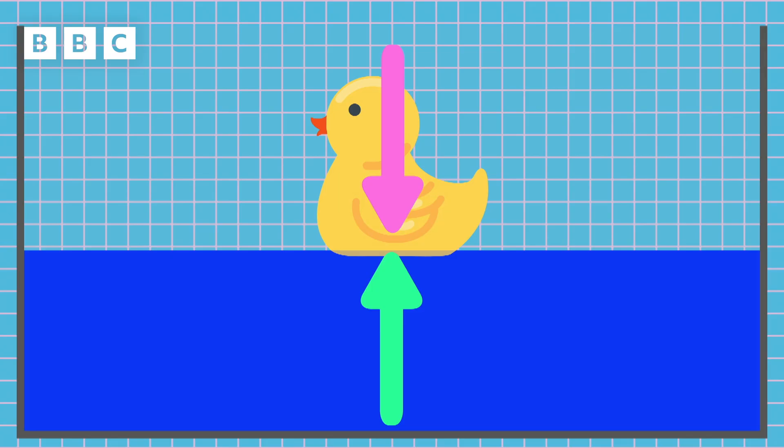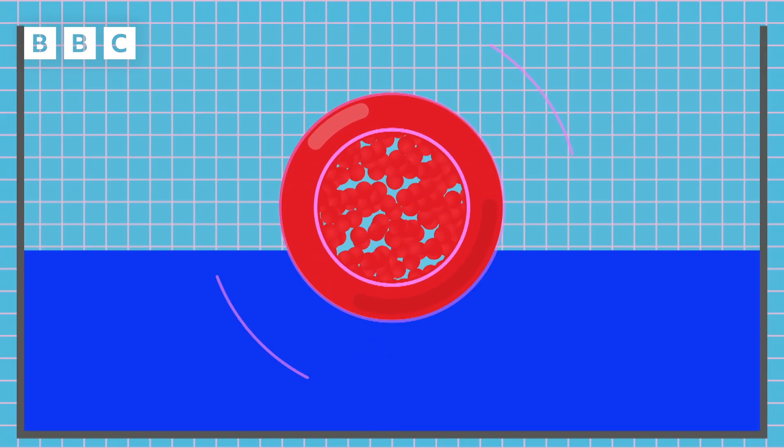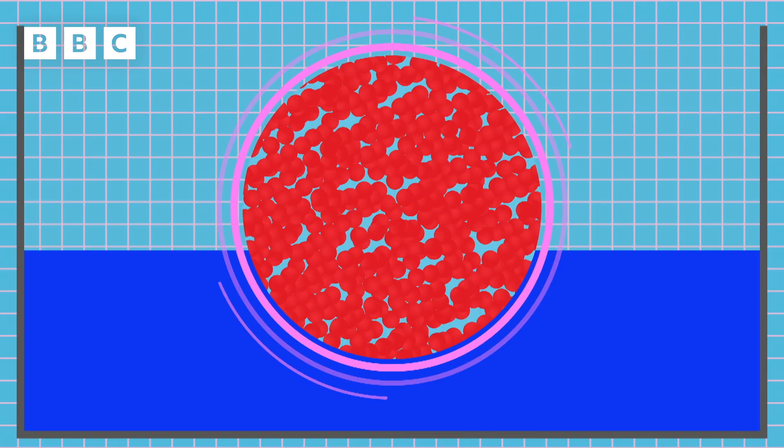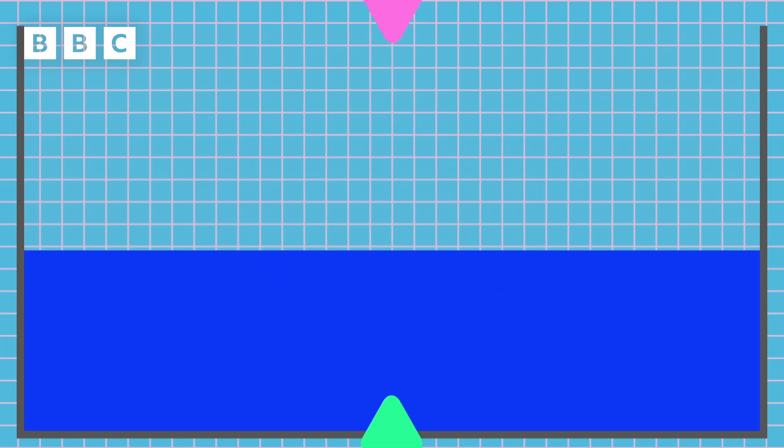An object like a snooker ball is dense. This is because the material and particles it is made from are tightly packed together. Because it is so dense, the effect of gravity is greater than the upthrust, so it sinks. It is not buoyant.